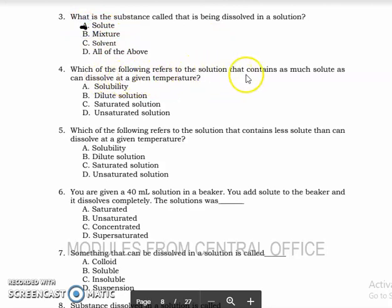Next, which of the following refers to the solution that contains as much solute as can dissolve at a given temperature? We call it saturated solution. Next, number 5, which of the following refers to the solution that contains less solute than can dissolve at a given temperature? That is unsaturated solution. Number 6, you are given a 40 ml solution in a beaker, you add solute to the beaker and it dissolves completely. The solution was unsaturated. It dissolves completely.